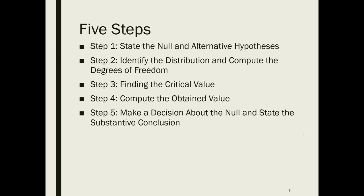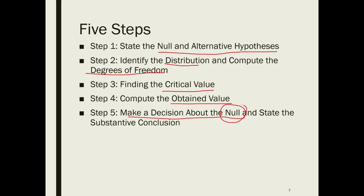Traditionally, we use five steps to run a hypothesis test. Chi-square is one of them, and we also use the five steps for t-tests, ANOVA, and correlation. Step one is the null and alternative hypothesis. Step two is distribution and degree of freedom. Step three is finding the critical value. Step four is calculating the obtained value. Step five is making a decision to accept or reject the null hypothesis.